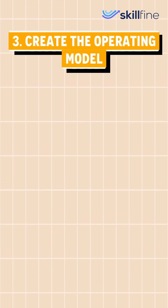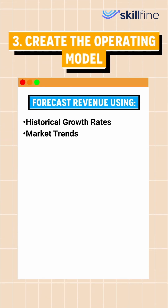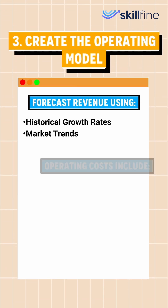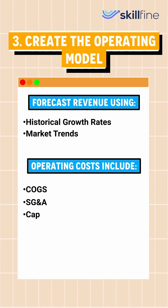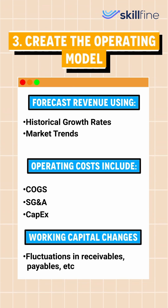The next step is to create the operating model, which we start by forecasting revenue. Then we incorporate operating costs to calculate EBITDA. Lastly, we include changes in working capital.